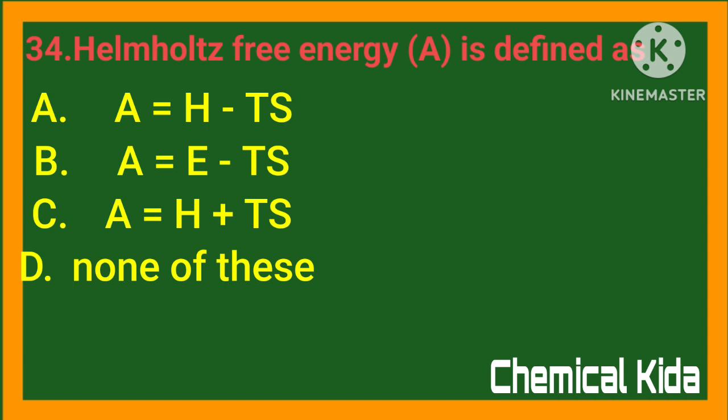Helmholtz free energy is defined as: a) A = H − TS, b) A = E − TS, c) A = H + TS, d) none of these. Answer: b) A = E − TS.